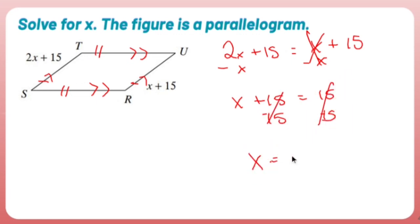So x equals zero, and you might be thinking, no, no, no, that can't be right. You can't have zero distance.